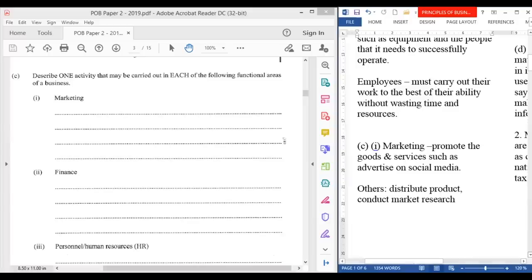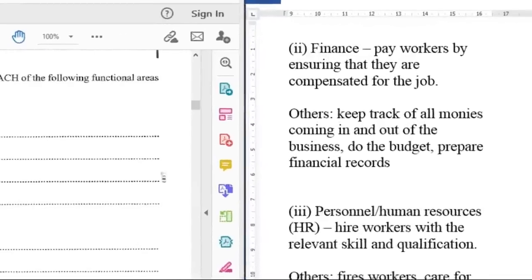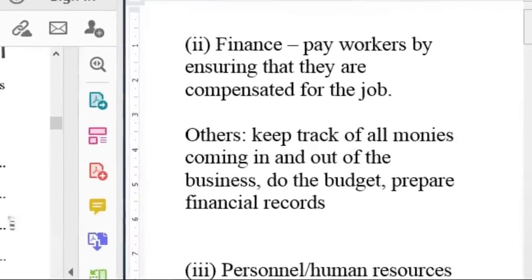For finance, one activity is that they pay workers by ensuring that they are compensated for the job that they do. Other activities include keep track of all monies coming in and out of the business, do the budget, and prepare financial records.